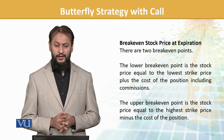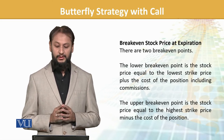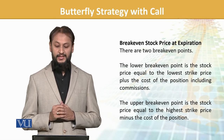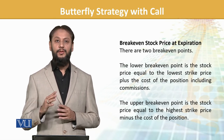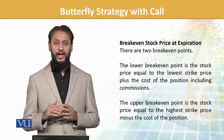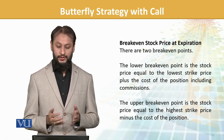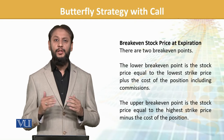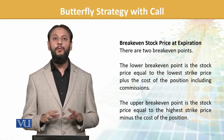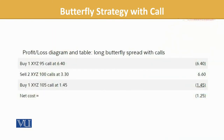Break-even stock price at expiration — is ke do break-even points honge. The lower break-even point is stock price equal to lowest strike price plus the cost of position. Lowest strike price pe aa jae to woh humara break-even point aayega. The upper break-even point is stock price equal to the highest strike price minus the cost of position. Yeh dono bands ko jab touch karega, woh humara break-even hoga, kyunke utni amount wahan se capture ho rahi hogi. Isko dekh lete hain.